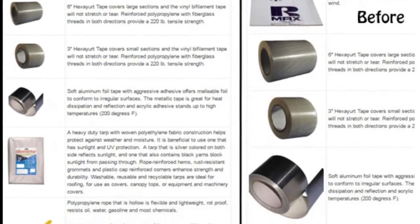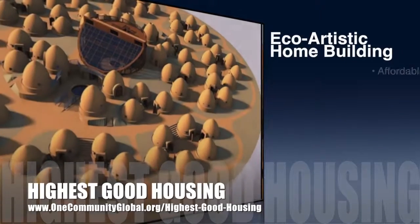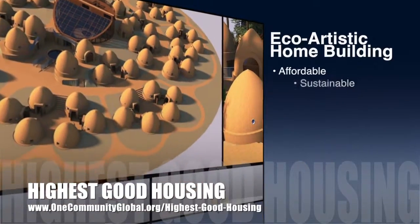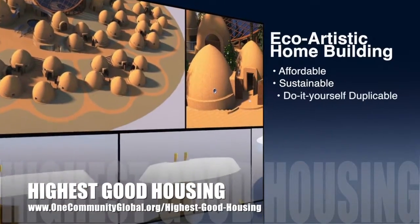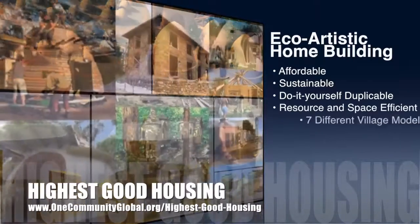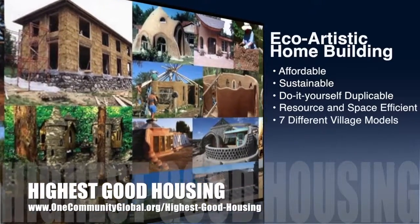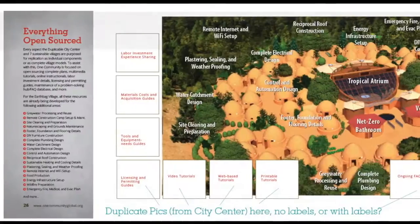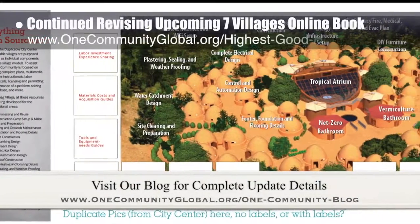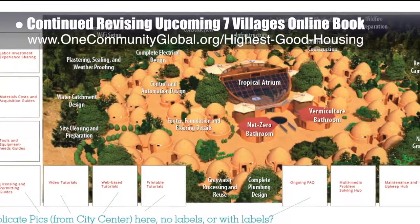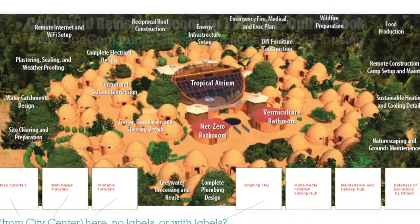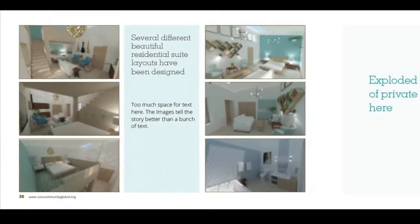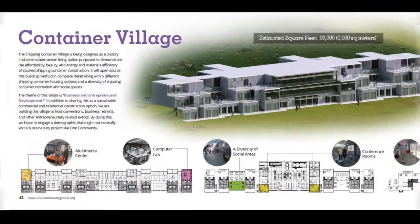One Community's approach to highest good housing is eco-artistic home building that is affordable, sustainable, do-it-yourself, duplicable, resource and space efficient, and consists of seven different sustainably constructed village models. This week, the core team continued with layers of revisions for the upcoming Seven Villages online book. Here are some of the evolving layouts from the EarthBag Village, Straw Bale Village, and Shipping Container Village.